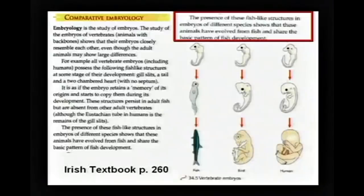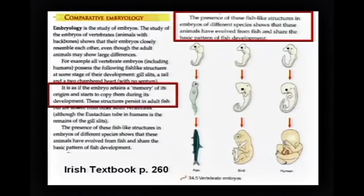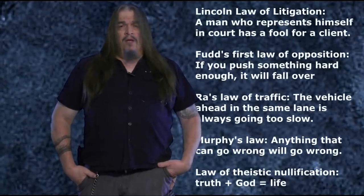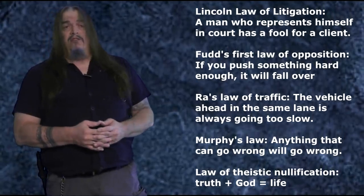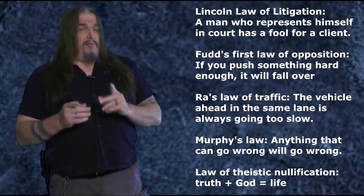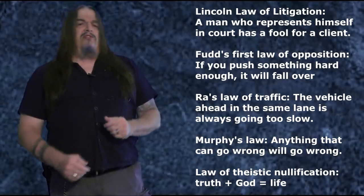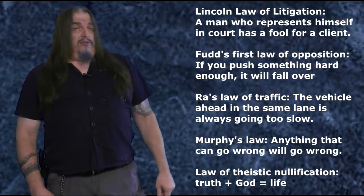This Irish textbook says: the presence of fish-like structures in embryos of different species shows these animals have evolved from fish and share the basic pattern of fish development. It's as if the embryo retains a memory of its origins and starts to copy them during its development. That's the ontogeny recapitulates phylogeny. No, it isn't — although that is what it should be.